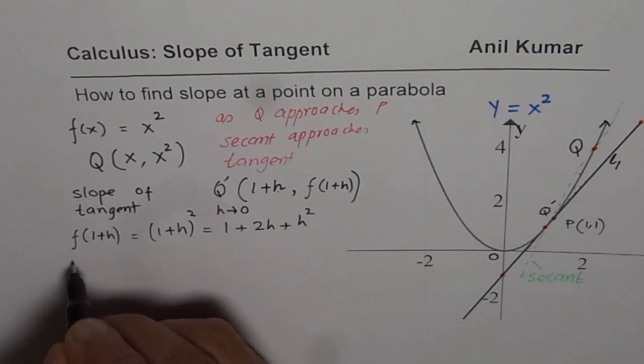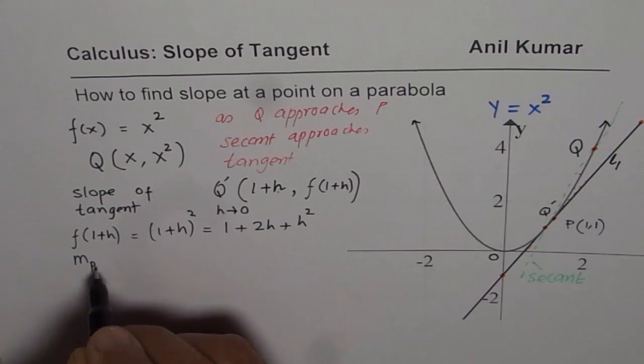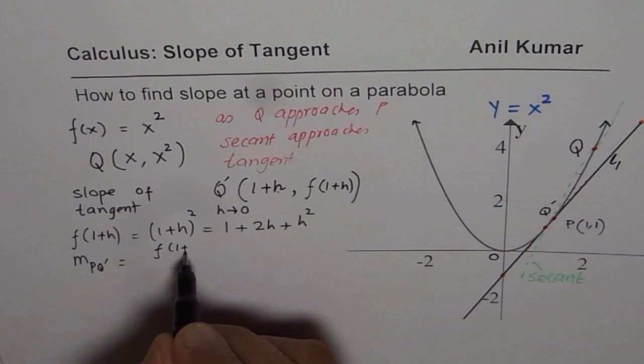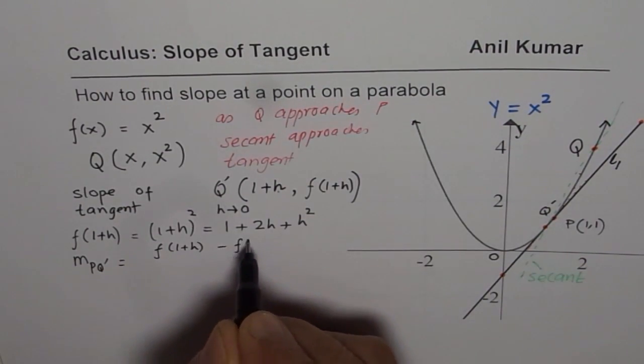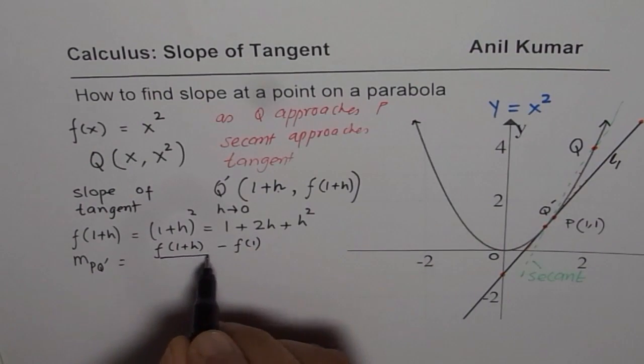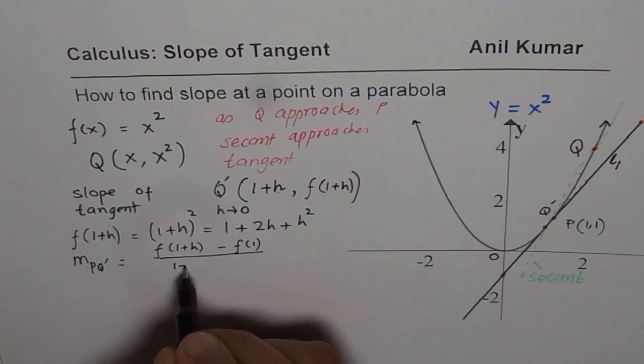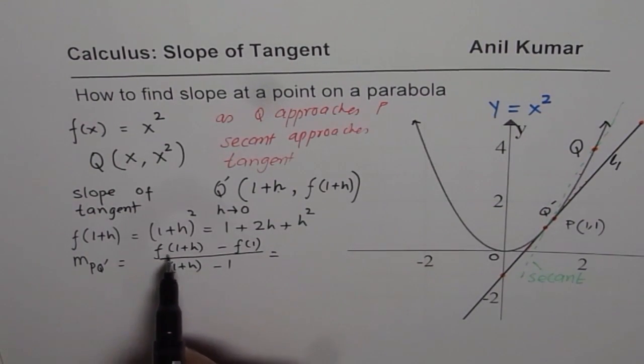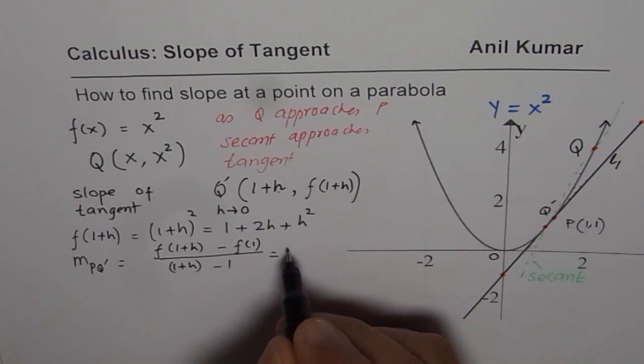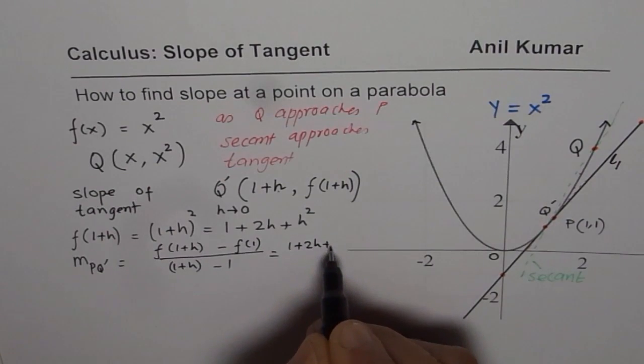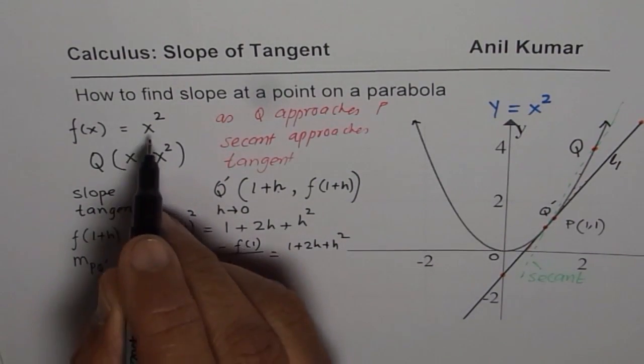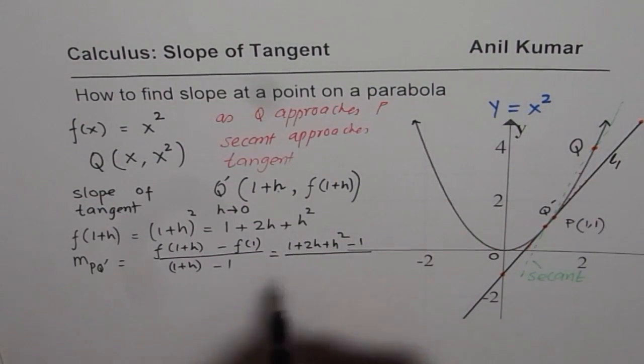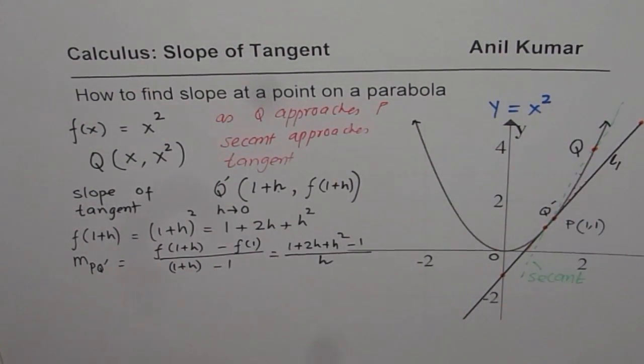Now we can find the slope. So we can say slope PQ dash will be Y2 minus Y1, or F of 1 plus H minus F of 1. The value at 1 divided by 1 plus H minus 1. Now, F of 1 plus H is 1 plus 2H plus H square. And F of 1, if I substitute, I get 1, which is given to us, minus 1 divided by 1 plus H minus 1 is H.